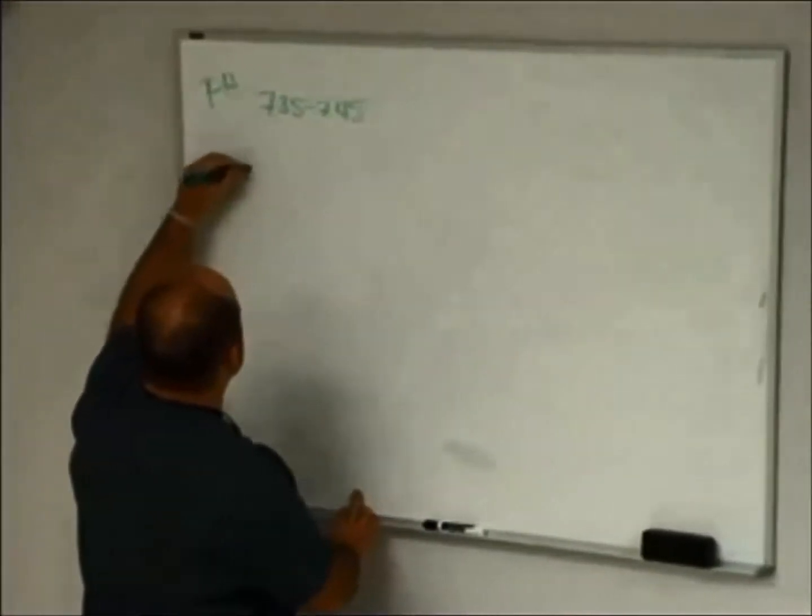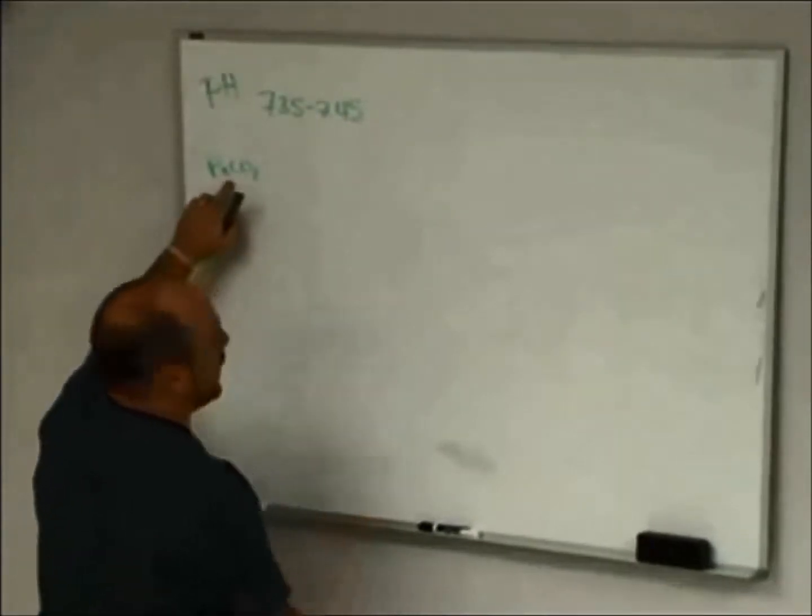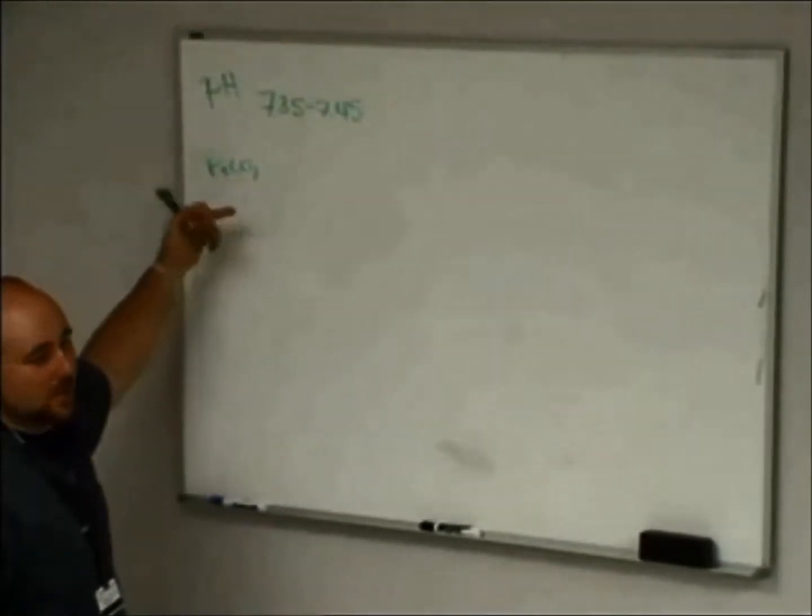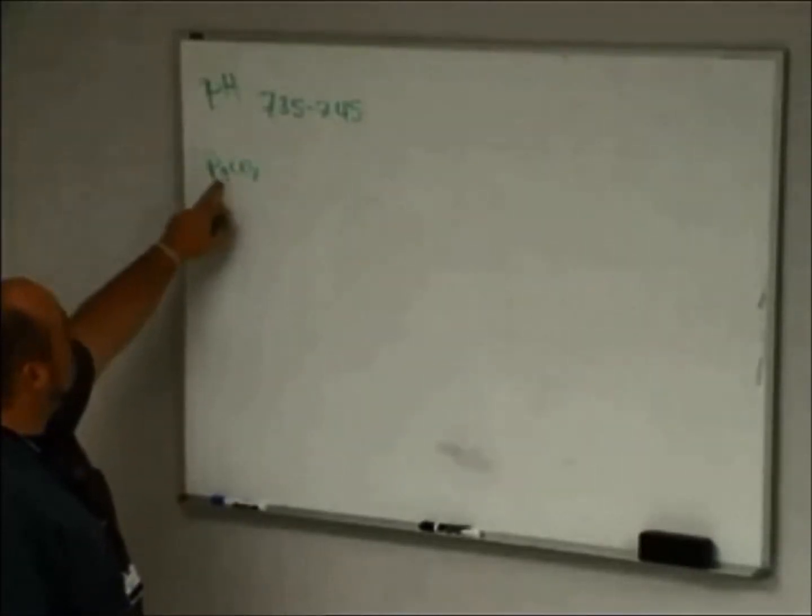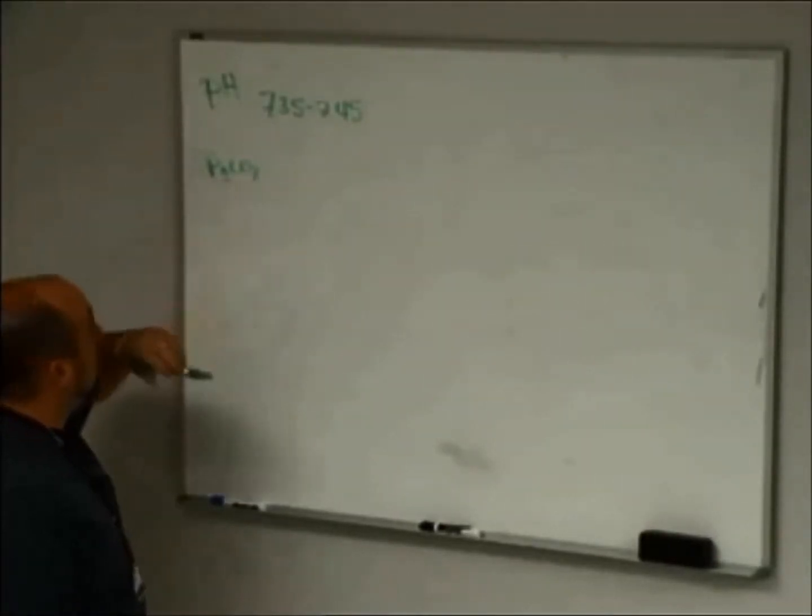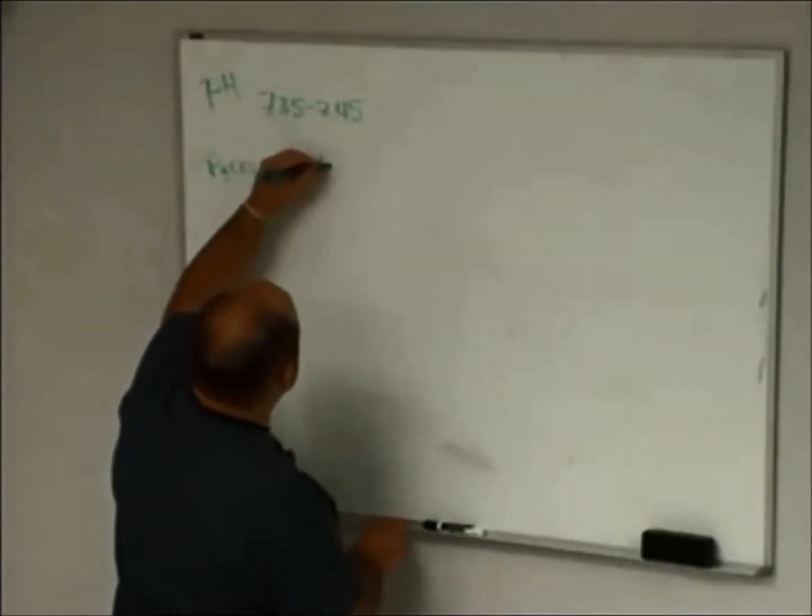We know PaCO2. Well, it's P little a CO2, what that little a stands for, just for your own knowledge, that's arterial concentration, the partial pressure of CO2 in the arteries. That's pretty easy too, because that's 35 to 45.